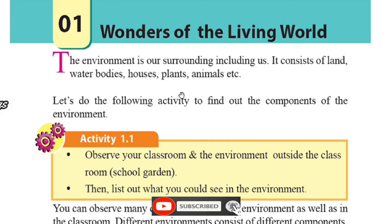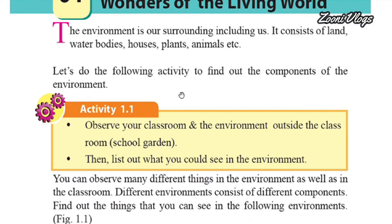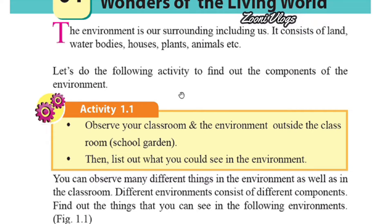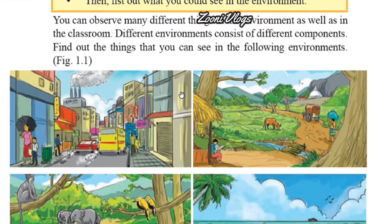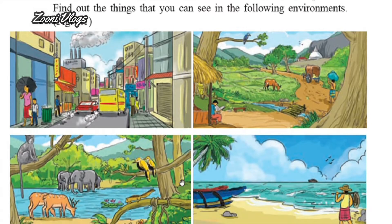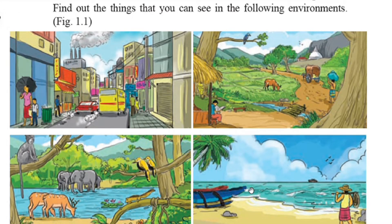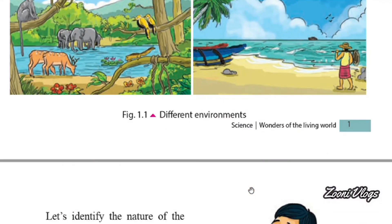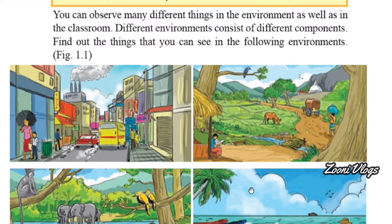Now let's do the following activity to find out the components of the environment — Activity 1.1. Observe your classroom and the environment outside the classroom including school gardens. From the first picture we can see an urban environment. The second picture shows a rural, greenish environment with fresh air. The third picture also has a greenish environment with animals, and the fourth picture shows a clean environment with a seashore. Each picture is different, but each place refers to the environment.